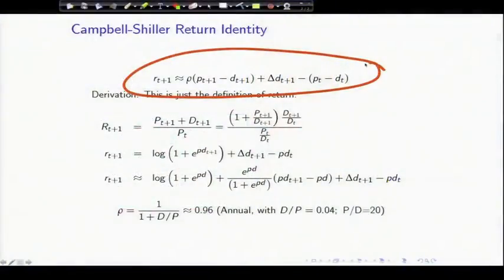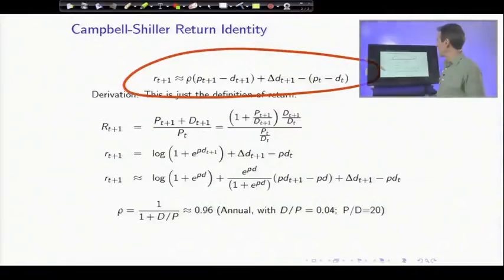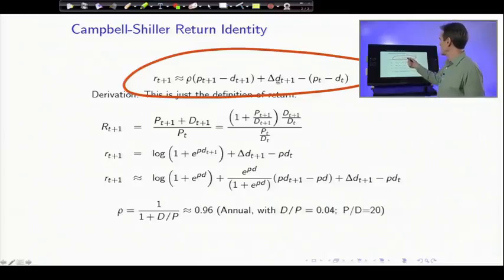Here's what it says. Return, log return, is approximately rho, which is a number like about .96, times tomorrow's log price dividend ratio, plus dividend growth, minus today's price dividend ratio.